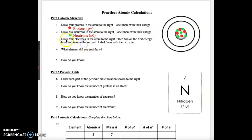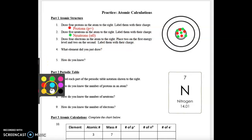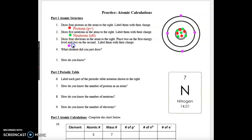Number three says draw four electrons in the atom to the right. Place two on the first energy level and two on the second, and label them with their charge. I'm going to draw those as purple — two in my first energy level and two on my second energy level. We know that electrons are electrically negative; they have a negative charge.